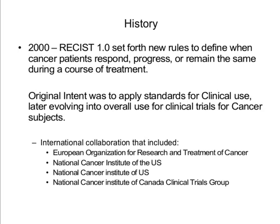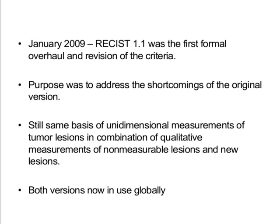A comparable example would be ICH, which was developed to create a standard among groups using it and is now pretty much the de facto standard worldwide in doing clinical trials. In January of 2009, RECIST 1.1 became the first formal overhaul and revision of the criteria. The purpose was to address how to handle the data and also address the shortcomings of the original version — it would be terrific if we could issue one set of standards without modification, but this is the second iteration of that.